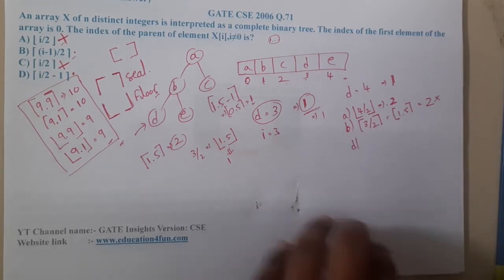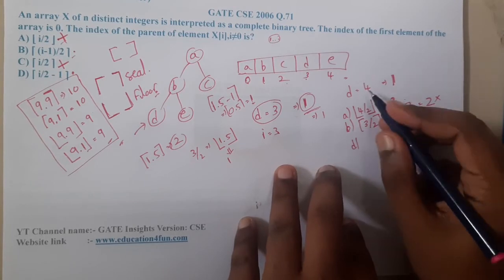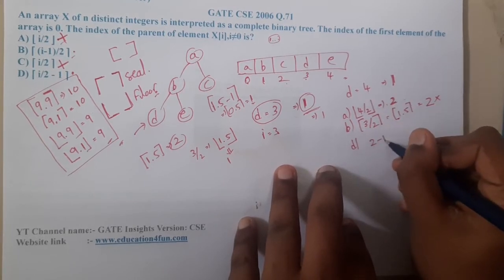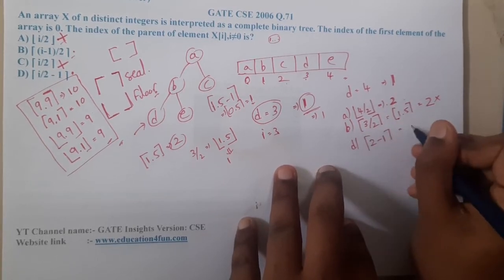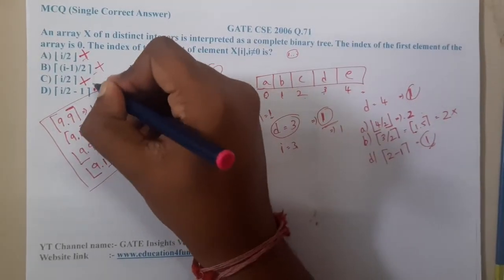So now you are getting an idea. Let us go through option D. That is firstly we are doing i by 2, means 4 by 2 you will get 2 minus 1 ceil value, so you will be getting 1. This answer is matching. Hence you can say that option A, B, C are wrong and D is the correct answer.